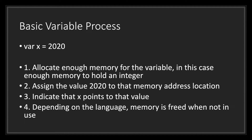Let's look at the basic variable process. We have a variable X which equals the literal integer 2020. First, the application allocates enough memory for the variable — in this case, enough to hold an integer. Second, it assigns the value 2020 to that memory address location. Third, it indicates to the variable X that it needs to point to that value. Lastly, depending on the language, memory is freed when not in use.